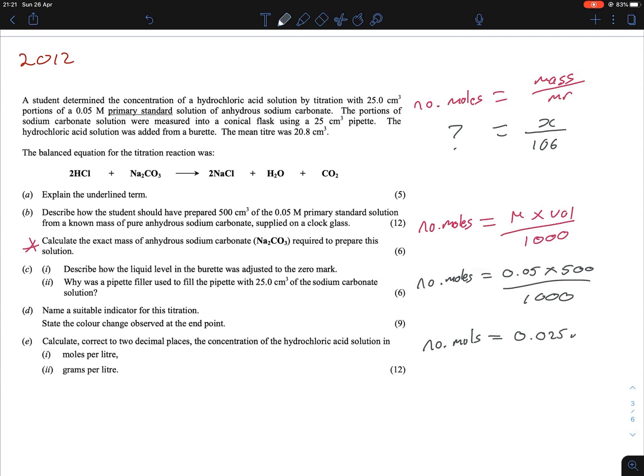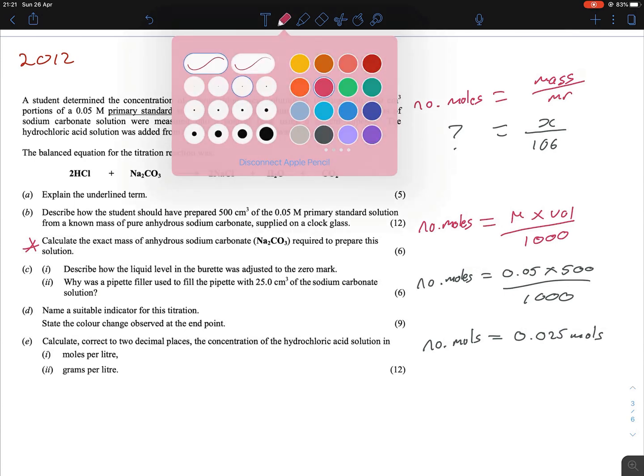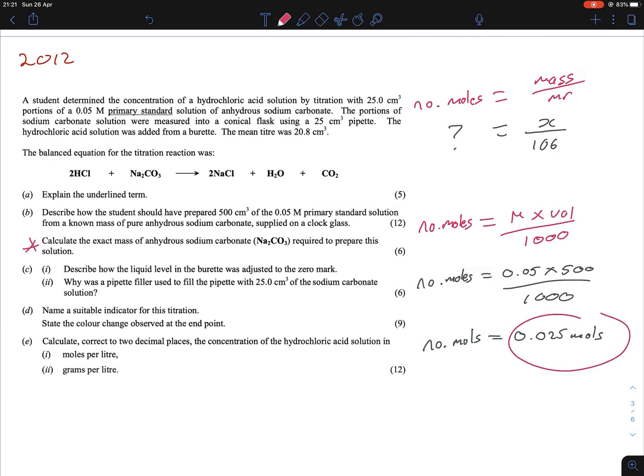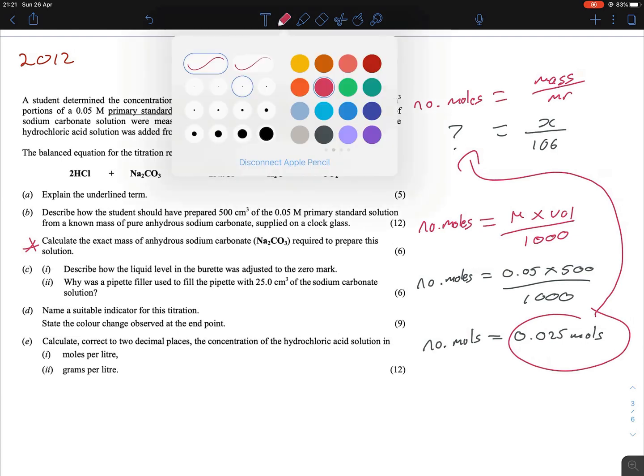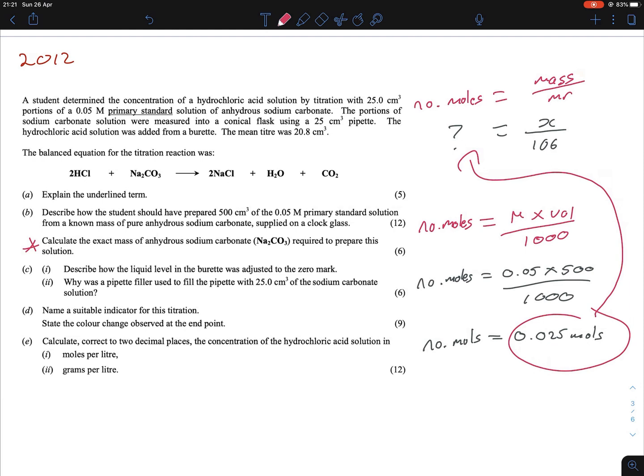So now we have our number of moles. All you have to do there is throw this figure to the number of moles here. Very simple then, you multiply the number of moles times the MR, and you're going to get your mass. Your mass will be equal to 2.65 grams. That's it for the first one, for finding out the mass.